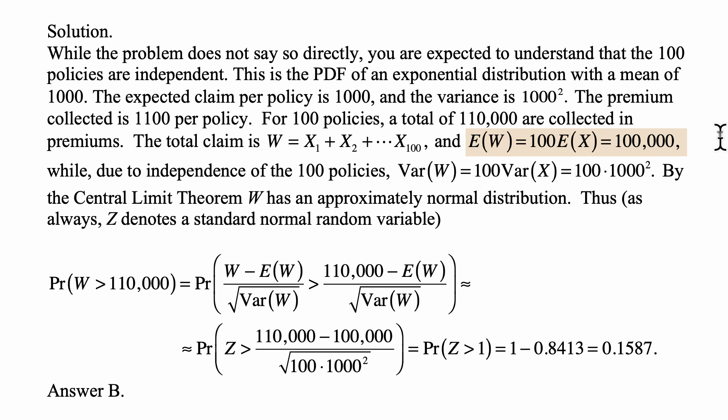You can see that immediately, because the top is 10,000, and the bottom is the square root of 100 is 10, the square root of 1,000 squared is 1,000. So 10 times 1,000, so 10,000, so the right-hand side is 1.